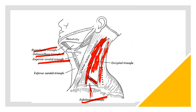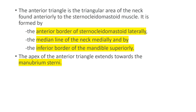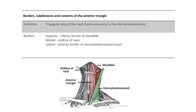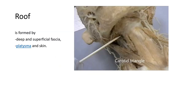Different names are given here but they refer to the same structures. This is the occipital triangle and this is the subclavian triangle. The anterior triangle — we have already discussed — is divided into muscular triangle, carotid triangle, submandibular triangle, and submental triangle. The borders of the anterior triangle: superiorly the inferior border of mandible, medially the midline of the neck, and laterally the anterior border of the sternocleidomastoid.